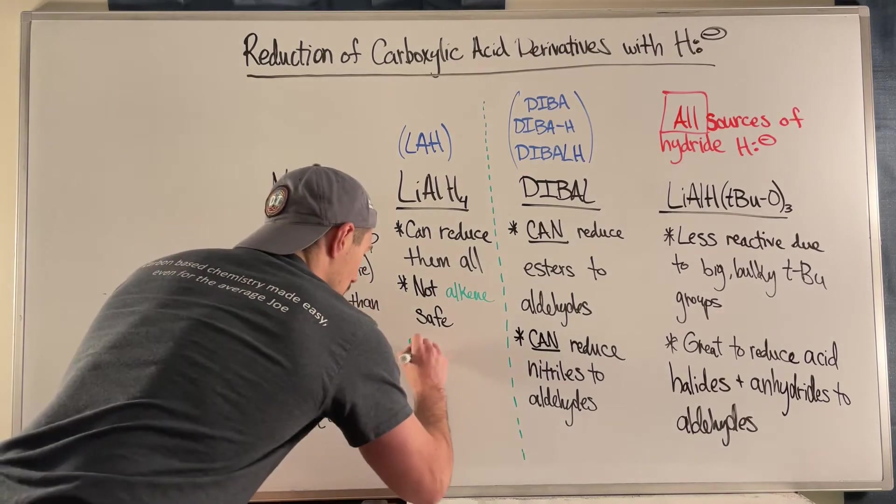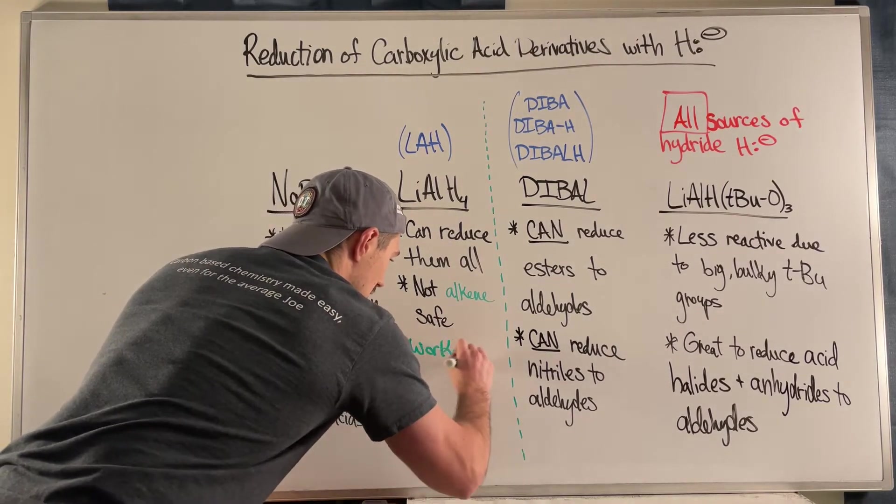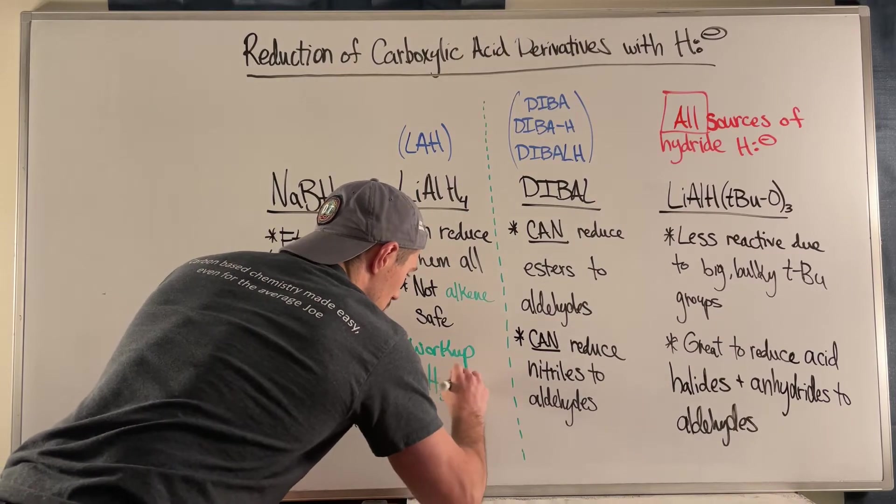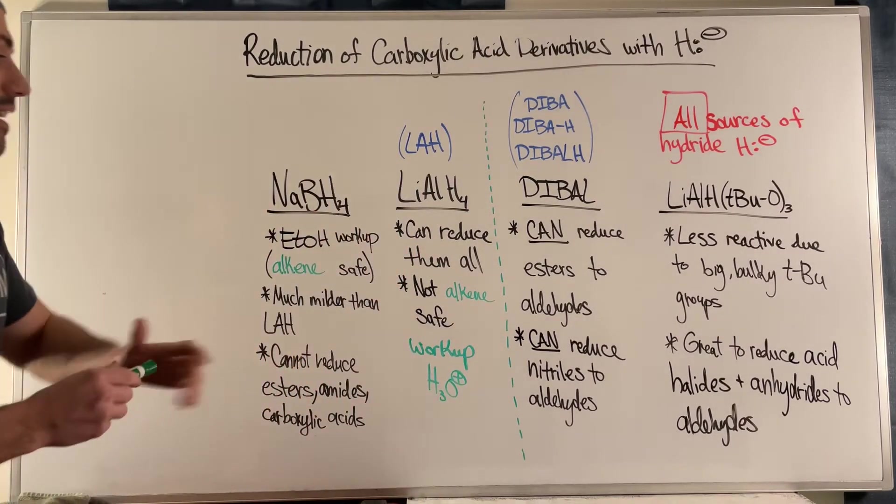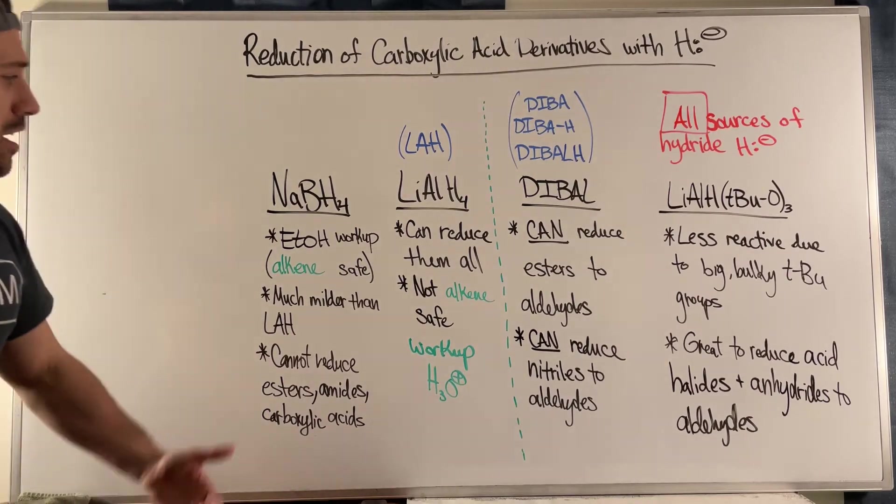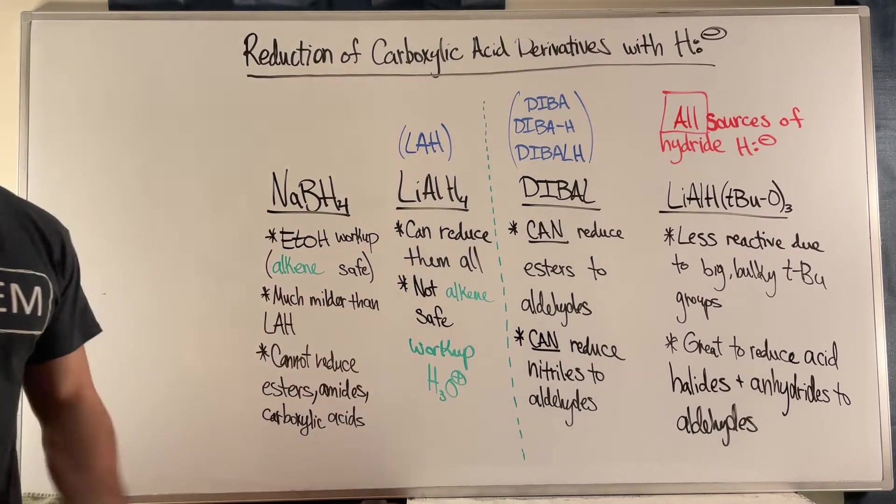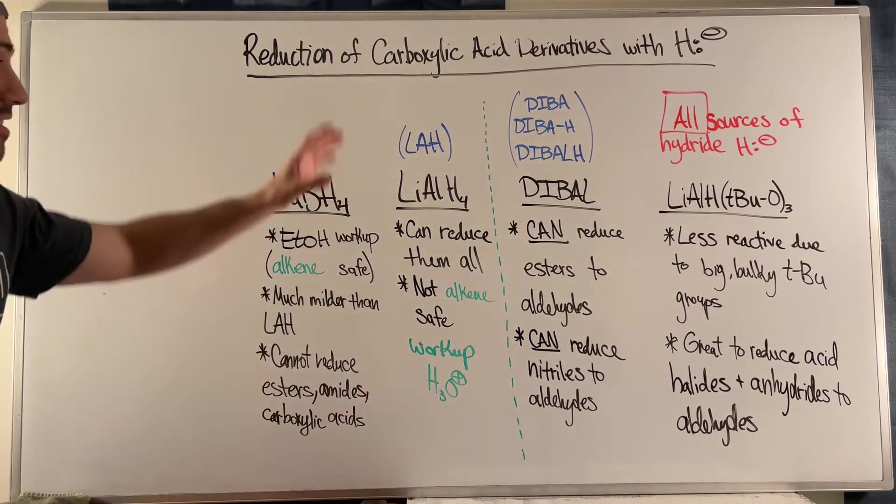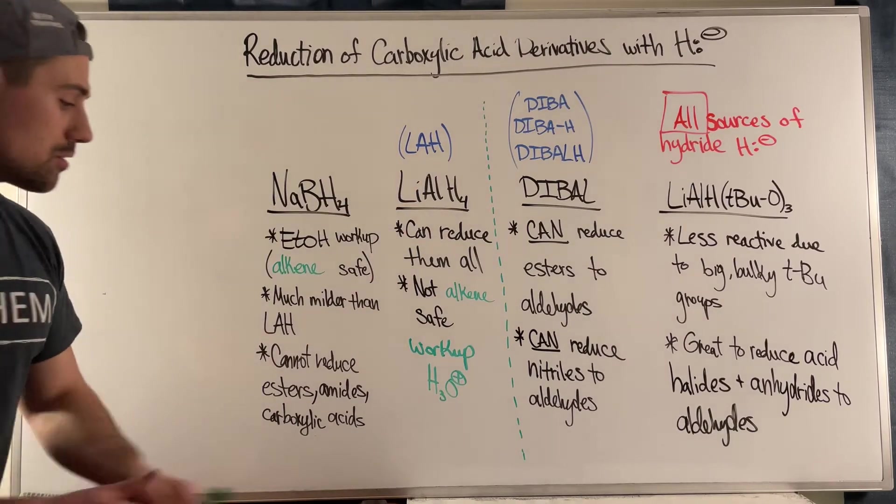And because the workup requires H plus, H3O plus, some type of acid, I wanted to highlight that because I think that's sometimes not emphasized enough. If you have no double bonds and you need to just reduce everything that you have, this is a great option in terms of carbonyls.